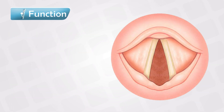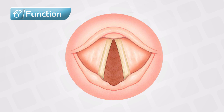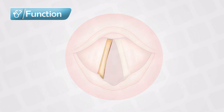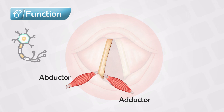These recurrent laryngeal nerves are very important for the vocal cord muscles. They innervate all the vocal cord muscles except the cricothyroid muscle, which is innervated by the superior laryngeal nerve. Each vocal cord has two muscles attached to it: one is the abductor and the second is the adductor, and these are of course innervated by the recurrent laryngeal nerve.